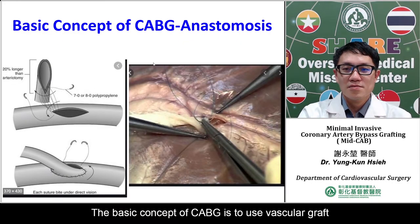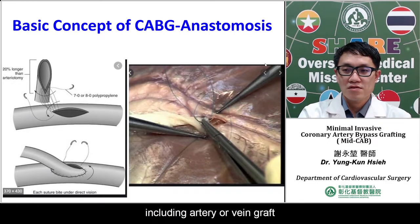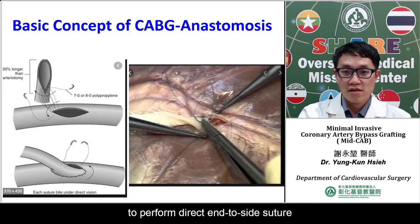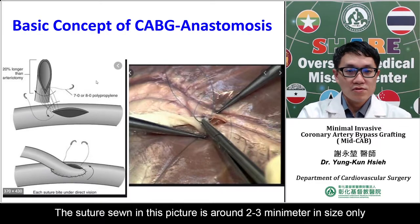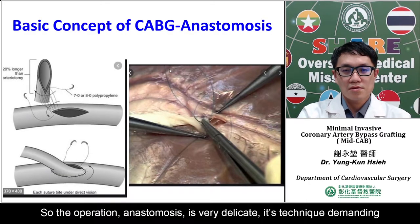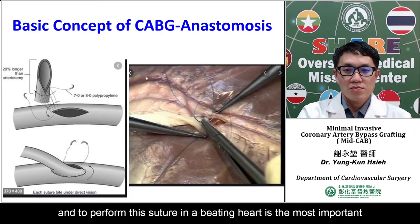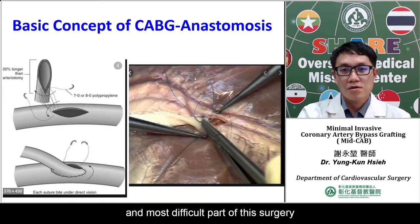The basic concept of CABG is to use vascular grafts including arterial or venous grafts to perform a direct end-to-side suture to the target coronary artery with 7-O or 8-O prolene suture. The suture shown in this picture is around 2 to 3 mm in size only, so the operation and anastomosis is very delicate. It is technically demanding, and to perform this suture on a beating heart is the most important and most difficult part of this surgery.